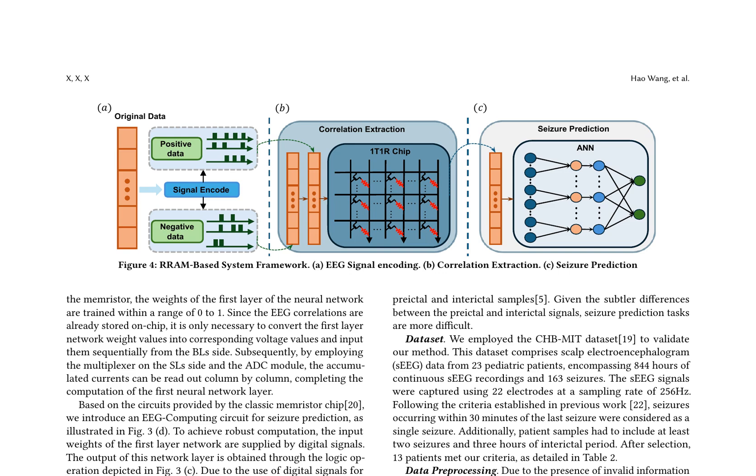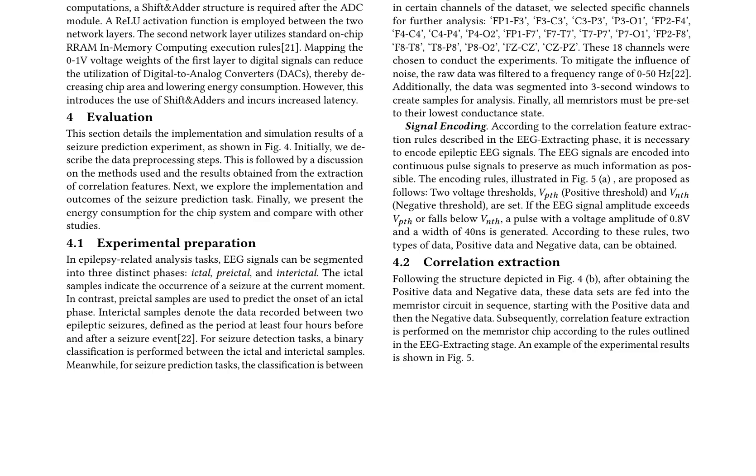The correlation extraction stage follows, using the memristor circuit to extract features from the encoded data. An example of the experimental results is shown in Fig. 5, demonstrating the effectiveness of this method in identifying patterns within the EEG signals. The final stage involves seizure prediction, utilizing an artificial neural network (ANN) to classify the extracted features into preictal or interictal phases. The weights of the first layer of the neural network are trained within a range of 0 to 1, and the output of this network layer is obtained through a logic operation. A ReLU activation function is employed between the two network layers, with the second network layer utilizing standard on-chip RRAM in-memory computing execution rules.